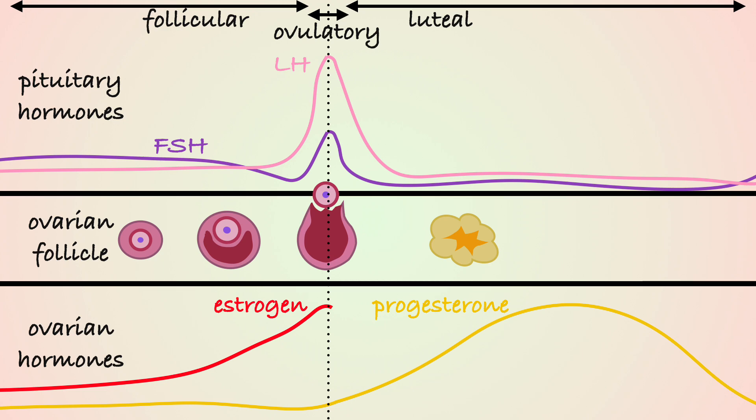If the egg is not fertilized, corpus luteum degenerates, estrogen and progesterone levels drop, stimulating the hypothalamus and pituitary gland to start another cycle and menstruation occurs.